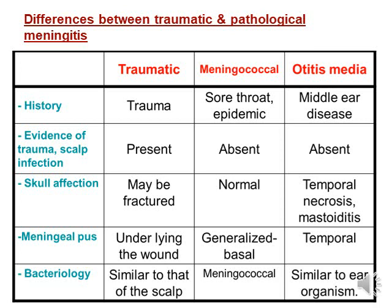The table shows the different types of meningitis and how to differentiate. In traumatic meningitis, history includes trauma. In meningococcal meningitis, there is a source contact and epidemic. In otitis media, there is middle-ear disease. Evidence of trauma and scalp infection is present only in traumatic meningitis. Skull fracture may be present in traumatic meningitis; meningococcal shows a normal skull; otitis media shows temporal bone necrosis and mastoiditis. The meningeal involvement is underlying the wound in traumatic, generalized but mainly basal in meningococcal, and temporal in otitis media.